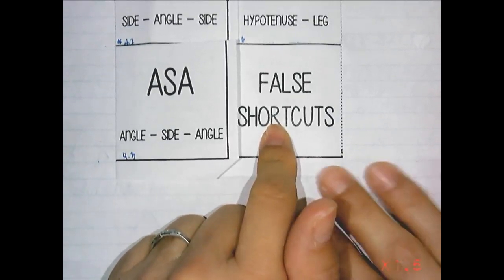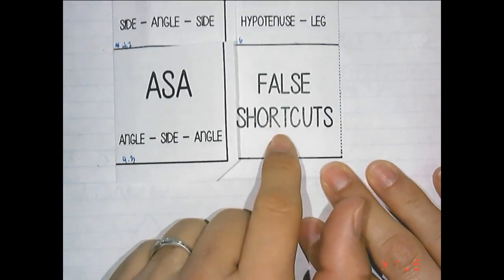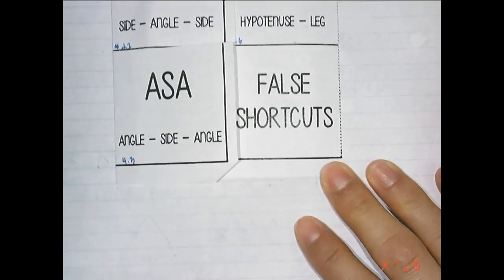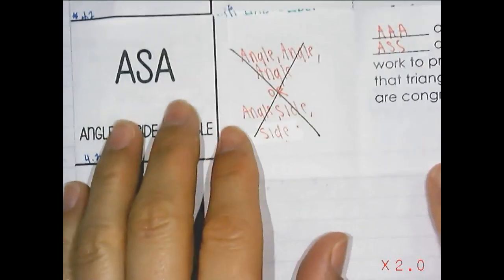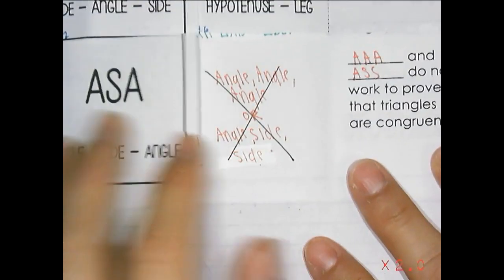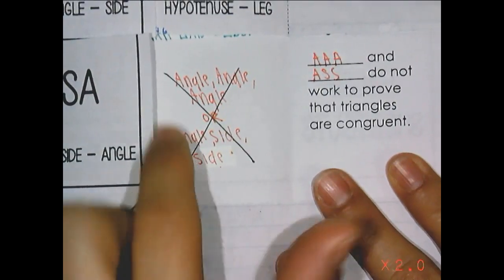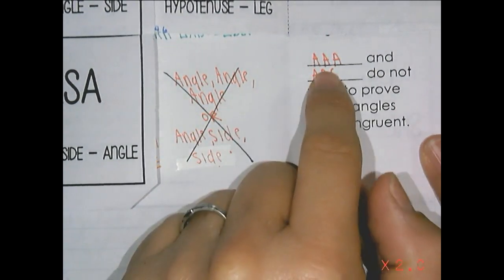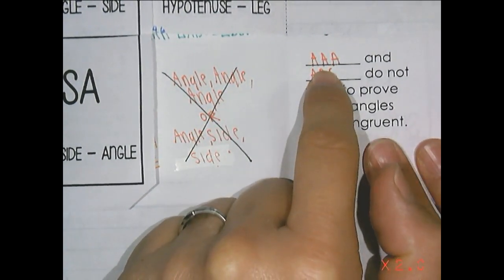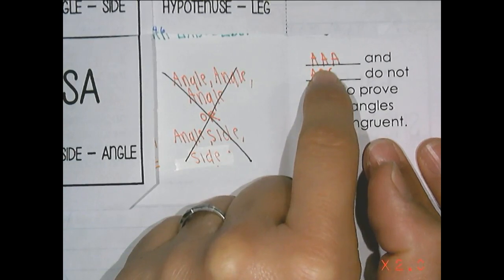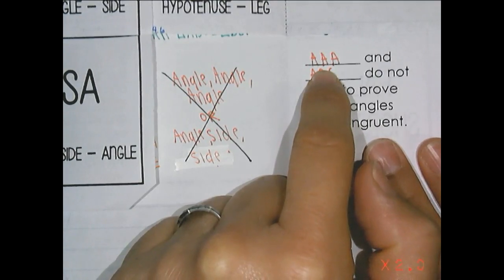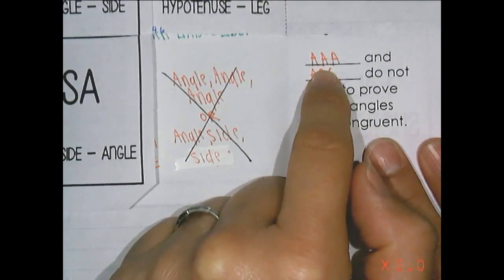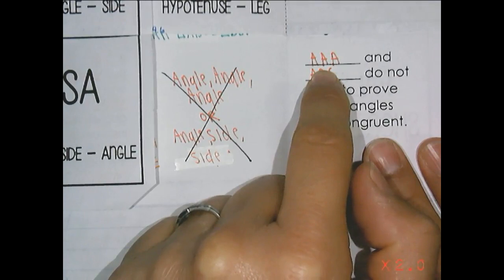Hey guys, before we get going into 4.4, I just want to talk about false shortcuts. Angle, angle, angle, otherwise known as AAA, is not coming to save you. AAA will not come to save you. That is not a way you can prove triangles congruent. If you try AAA, it will be wrong. There is no AAA coming to save you.